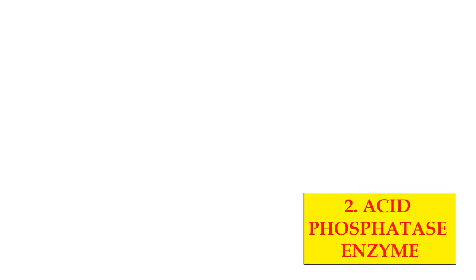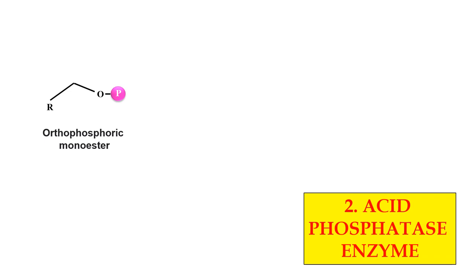The second type is Acid Phosphatase. Again, the name indicates it removes the phosphate under acidic condition. The substrate is ortho monophosphoric ester, also known as orthophosphoric mono ester.